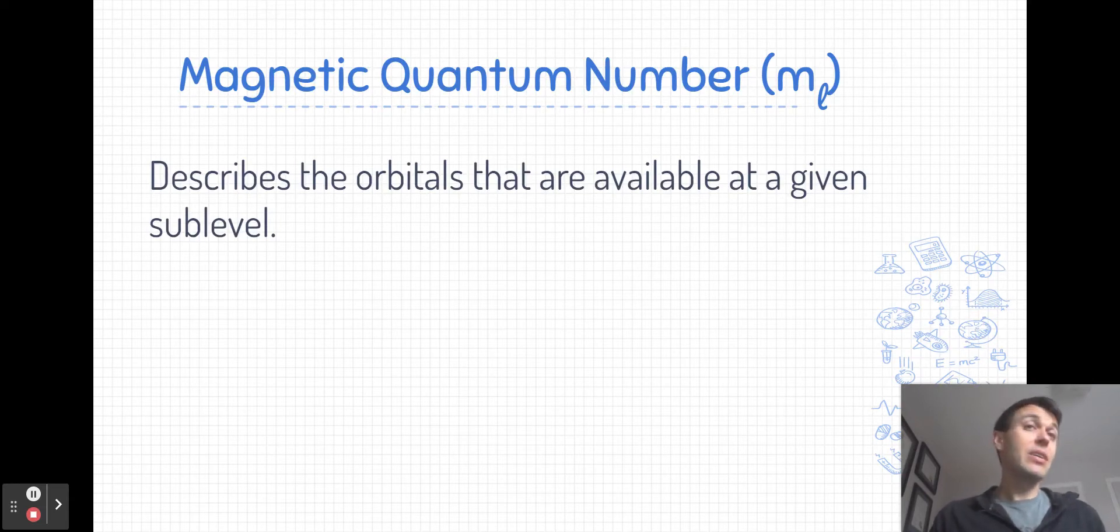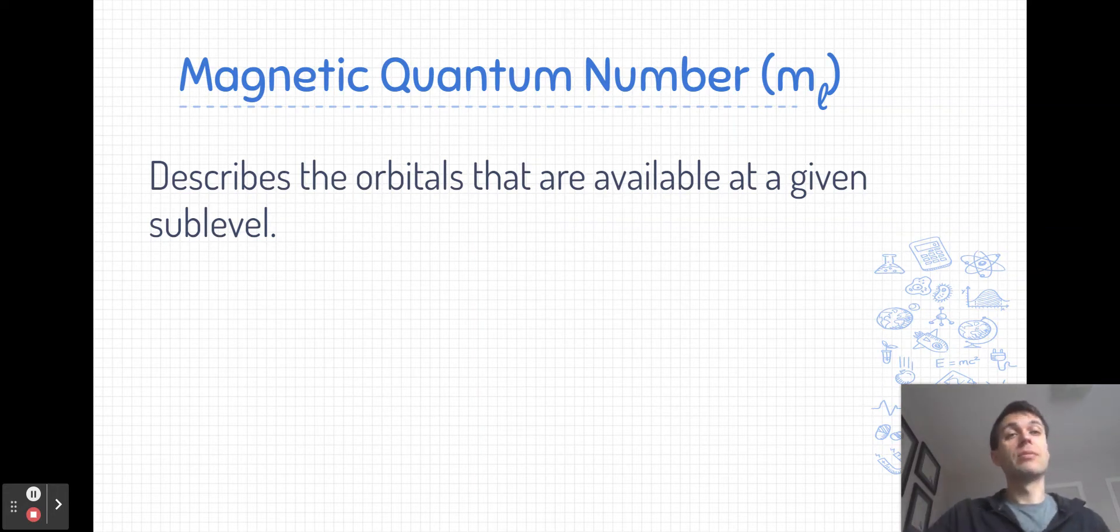One way of thinking about the magnetic quantum number is that it describes the orbitals which are available at a given sublevel. Note that it is in reference to a specific sublevel. Another way of thinking about this quantum number is thinking about it as describing the different orientations that are possible for every sublevel type.